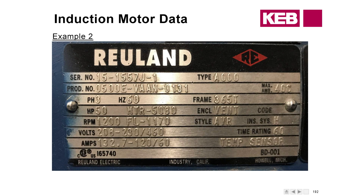Here's another Ruhlund example with roughly the same information — dual voltage configuration — but here they provided the full load RPM: 1170.